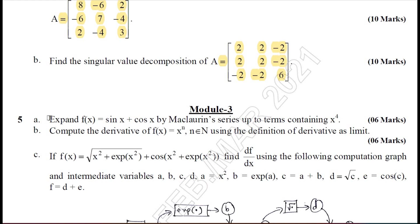Moving on to Module 3. Question 5A is on the Maclaurin series. You have solved this in the first semester of BE. You can solve it in the same manner with a slight change in formula. Just find f'(x), f''(x), f'''(x). As they have asked for up to x⁴, you require to find f⁴(x) — the 4th derivative. Then using normal differentiation, find the coefficient for x^n. It is easy to solve.